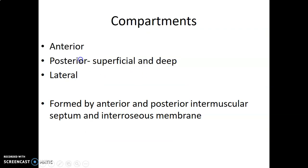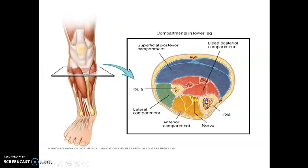The compartments of the leg are the anterior compartment, the posterior compartment (divided into superficial and deep), and the lateral compartment. These compartments are formed by the anterior and posterior intermuscular septa, the interosseous membrane, and the fascia cruris. Anterior to the tibia and fibula is the anterior compartment; posteriorly you have the superficial and deep posterior compartments; and towards the fibula is the lateral compartment.